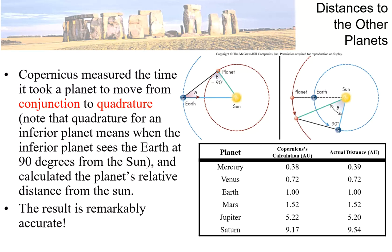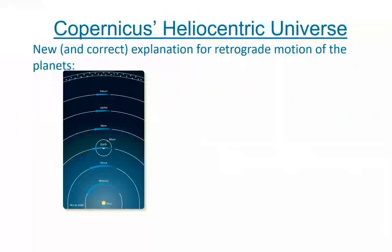Copernicus measured the time it took for a planet to go from conjunction to quadrature, and using that with some sophisticated math, he came up with distances from the sun to each planet. Looking at the middle column, those are Copernicus's distances; the final column shows the actual distances we have today. The only one with any significant variance is Saturn — he was pretty much spot on.